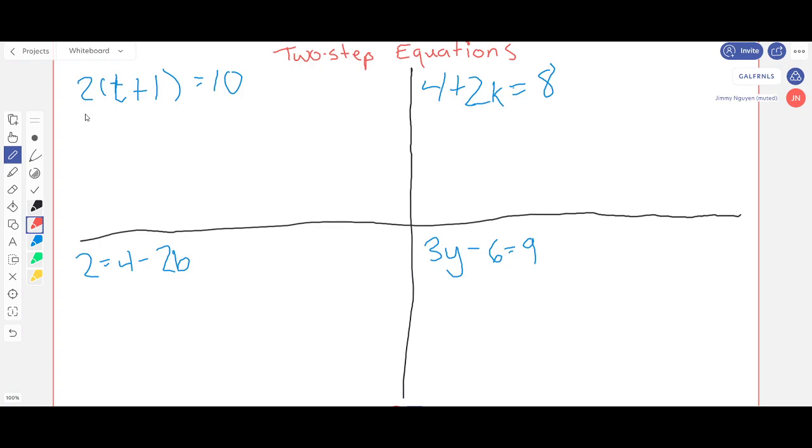So this first example, we have the variable here is t and our operations here are multiplication right here and addition right here. If we were to solve this problem normally we would use the order of operations which you all know as PEMDAS.